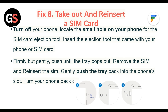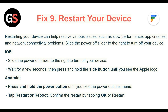Fix 8: Take out and reinsert the SIM card. Turn off your phone. Locate the small hole on your phone for the SIM card ejection tool. Insert the ejection tool that comes with your phone or SIM card, and firmly but gently push until the tray pops out. Remove the SIM and reinsert it, then gently push the tray back into the phone's slot. Turn your phone back on.